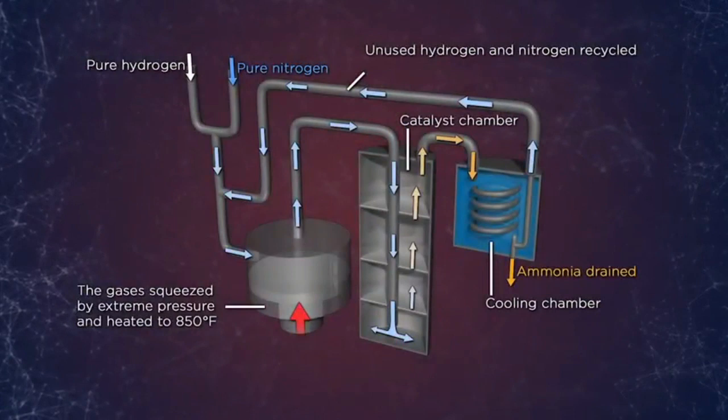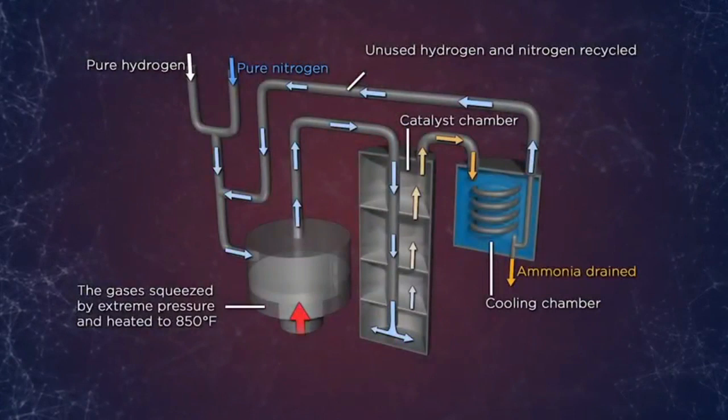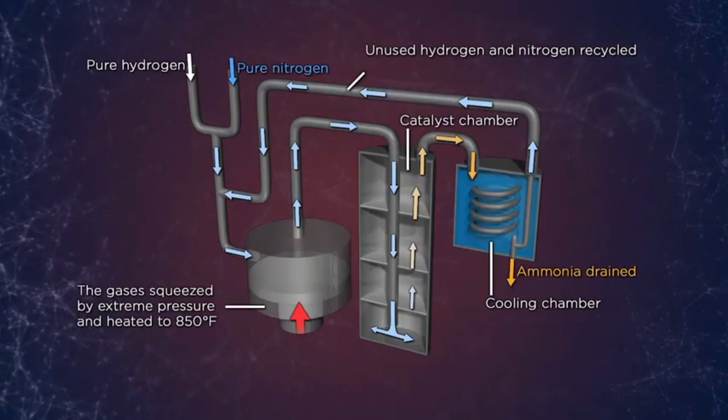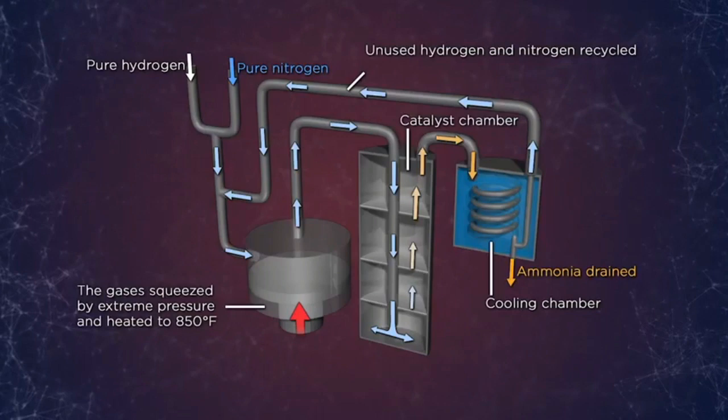Unrelenting, Haber applied Le Chatelier's principle again — creating a flow reactor in which the product from his reaction was passed into a cooler region, where the ammonia formed could be condensed into a liquid and collected, effectively removing it from the gaseous reaction mixture. The reaction mixture then flowed back into the high temperature chamber to reestablish equilibrium, making even more ammonia. This final adjustment to the process was the key. Using Haber's design, German chemical giant BASF began to work to scale the process up to truly industrial proportions, and Haber had succeeded in his primary goal of fixing nitrogen.